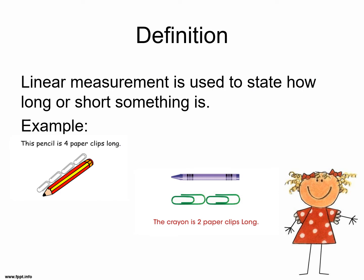Definition: Linear measurement is used to state how long or short something is.